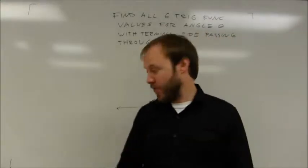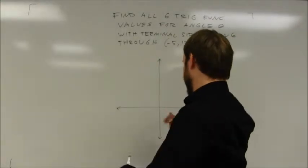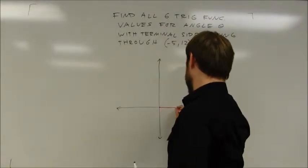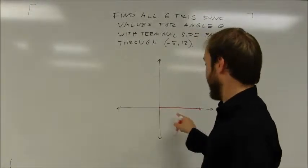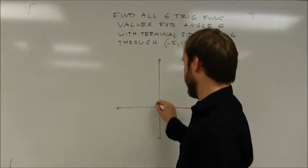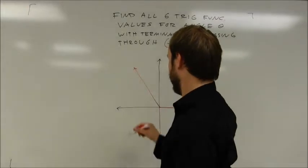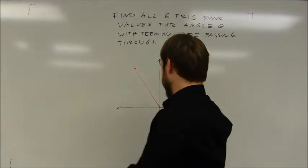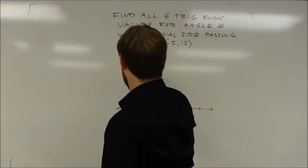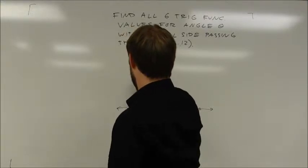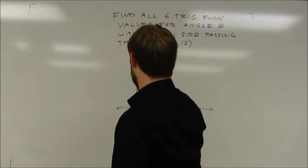So the first thing I want to do is I want to draw that angle in the standard position. As usual, I'm going to have a vertex at the origin. I'm going to have the initial side going like this. Negative 5, 12 is going to be over here somewhere, so I'm going to plot this over on this side, and so that's going to be the point negative 5, 12, and I can make a right triangle like this.